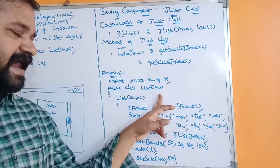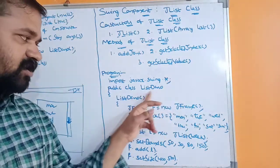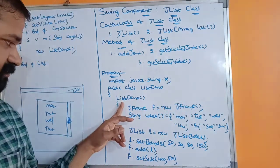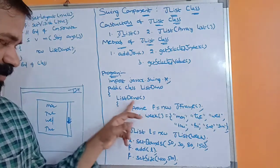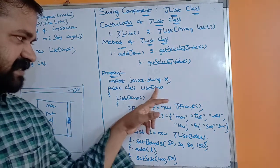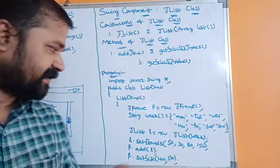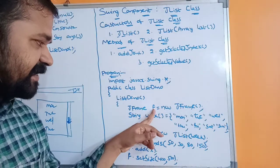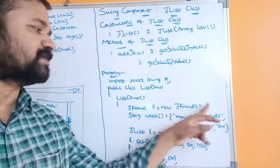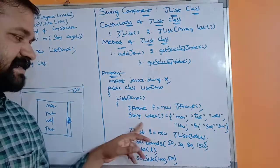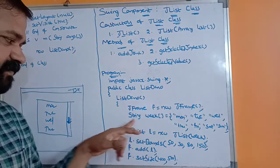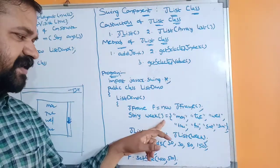Next, this is the class declaration. The name of the class is ListDemo. Next, this is the constructor — we know that the constructor name must be the same as the class name. Next, we have created a frame object: JFrame f = new JFrame(). Next, this is a String array.